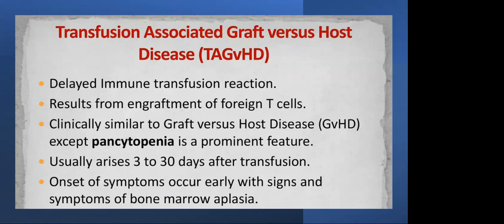The onset of symptoms occurs with signs of bone marrow aplasia. Giving non-irradiated blood to susceptible patients can cause TA-GvHD, which leads to bone marrow aplasia.